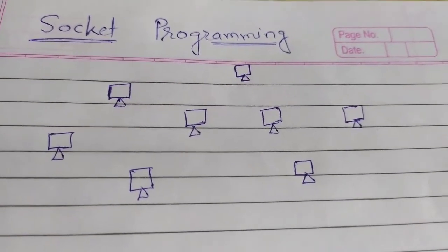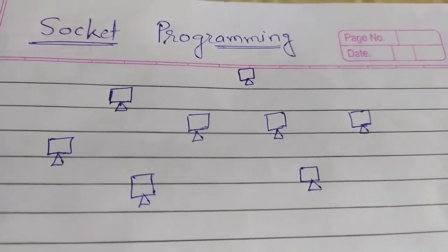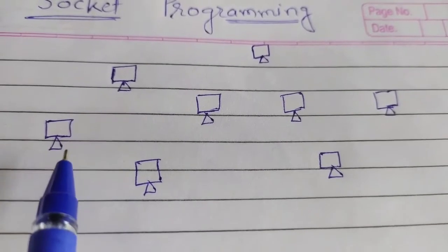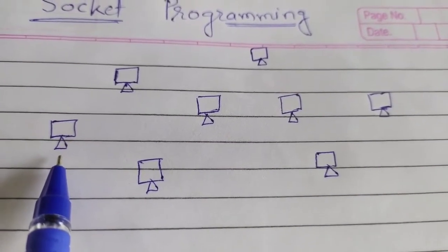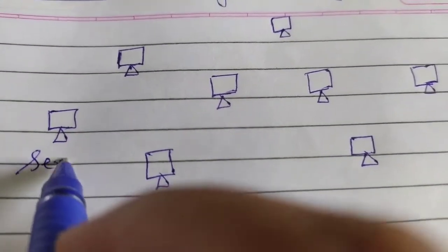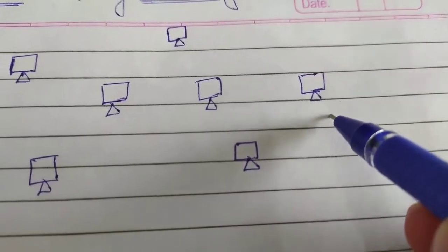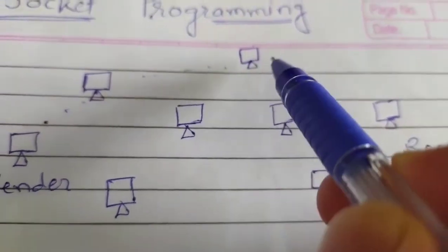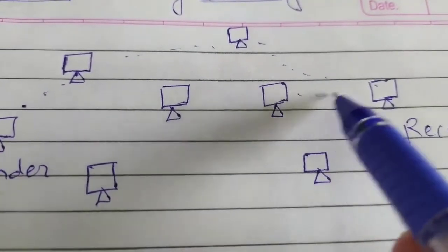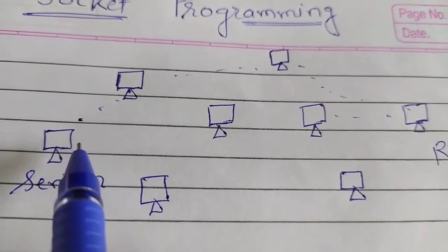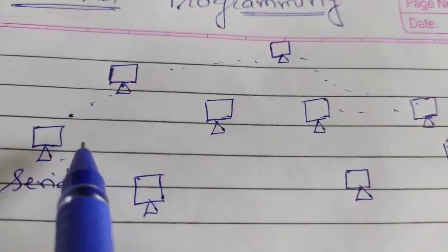Hello friends, welcome to my channel. I'm Parag Jambulkar. In this video we'll discuss socket programming. Assume there is a network with nodes — these nodes can be computers or any electronic devices, for example mobile phones or PDAs. Suppose this is the sender and this is the receiver. All these nodes are connected with each other by some communication medium, so when we send any message from sender to receiver, it will not go directly — it has to follow the medium.